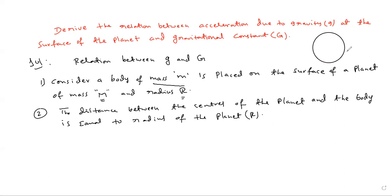This is planet having mass capital M. This is the body having mass small m. The distance between the center of the planet and the body is equal to the radius of the planet.